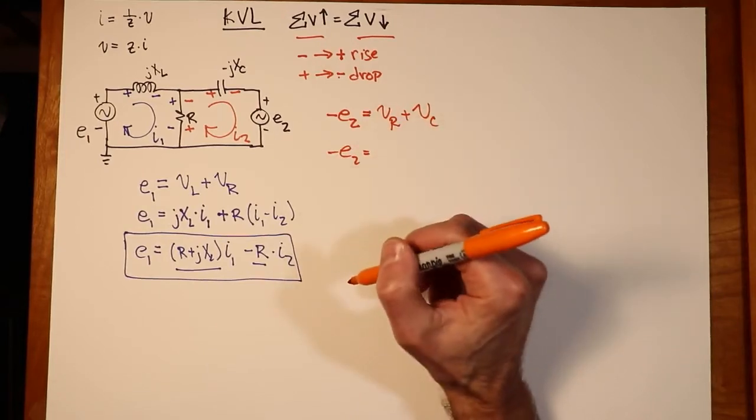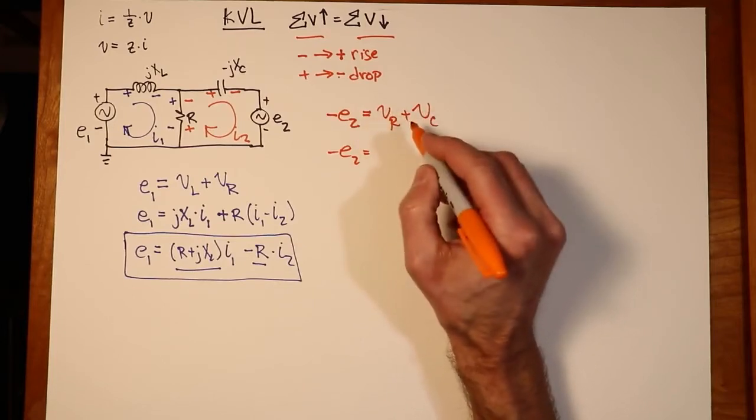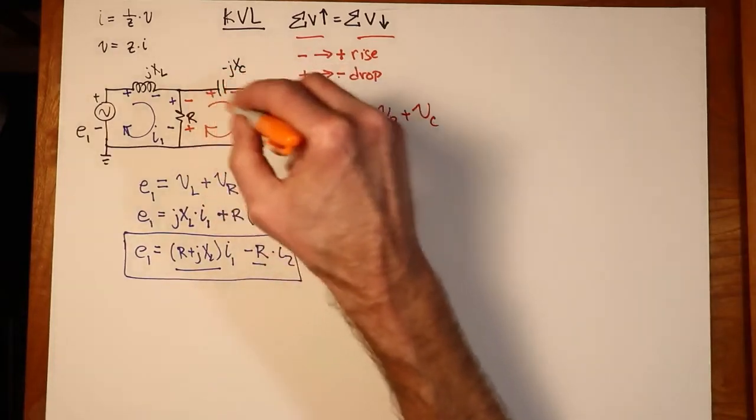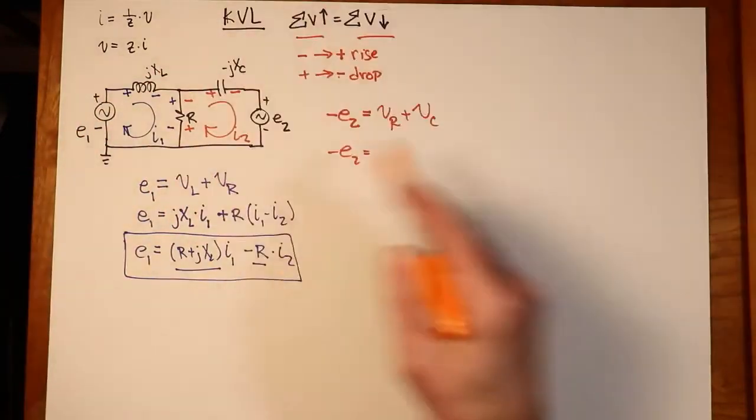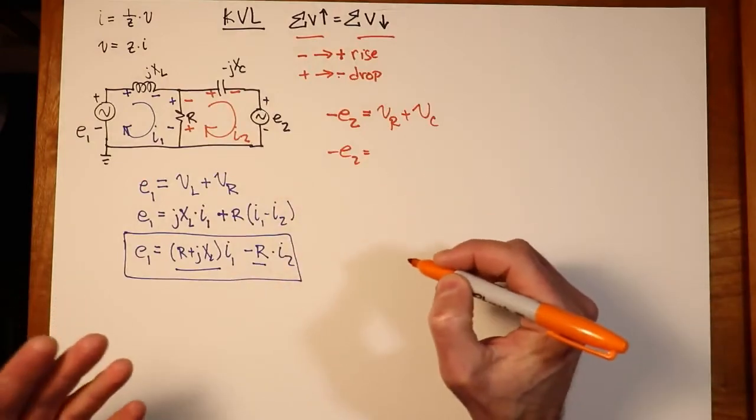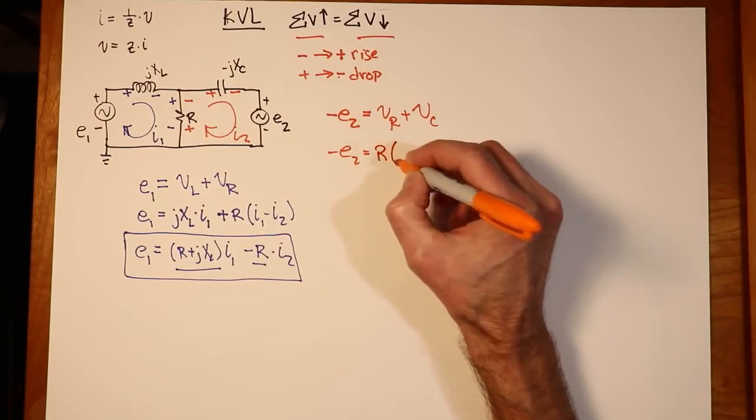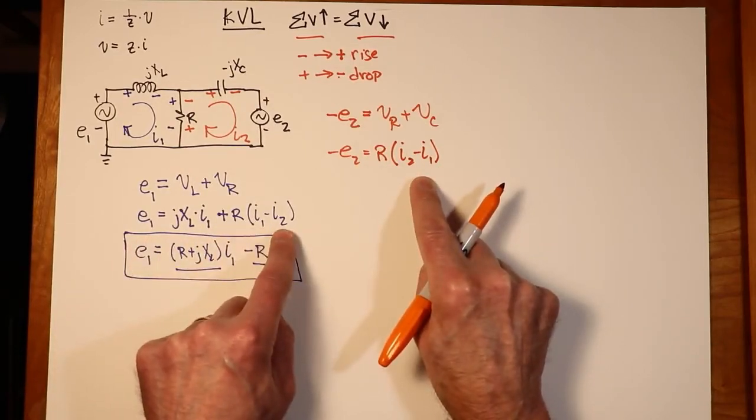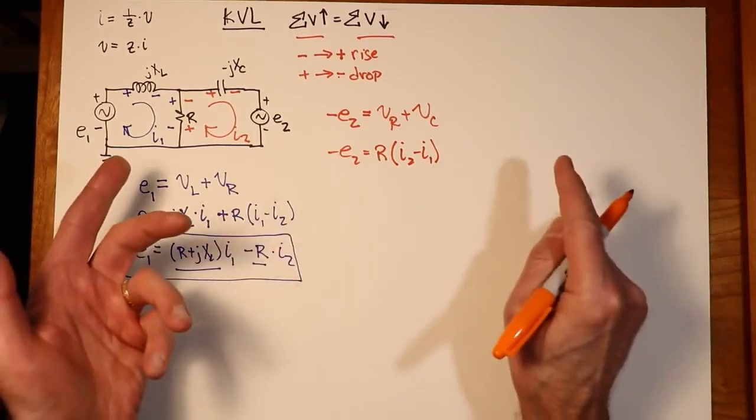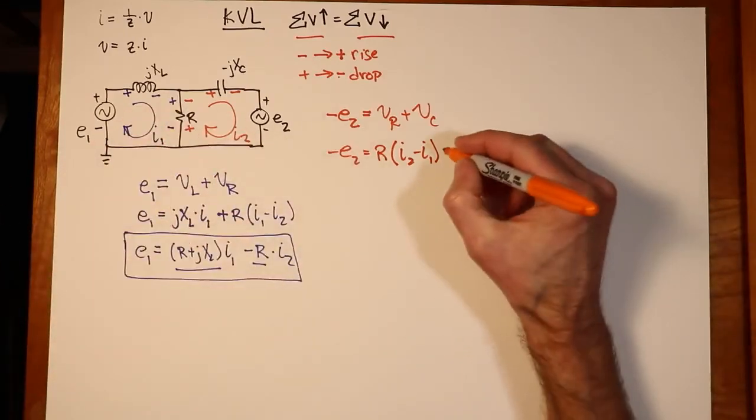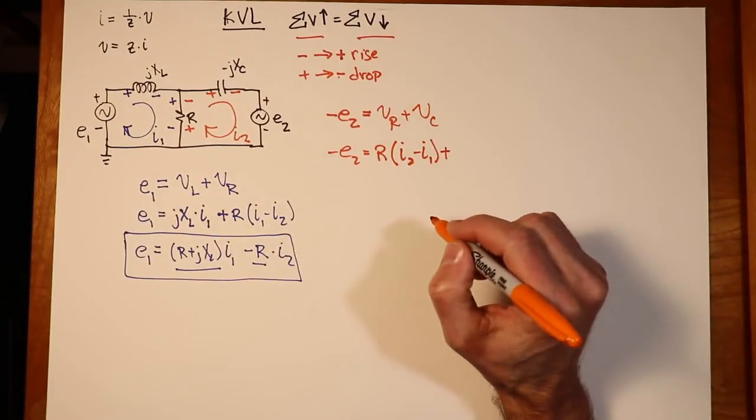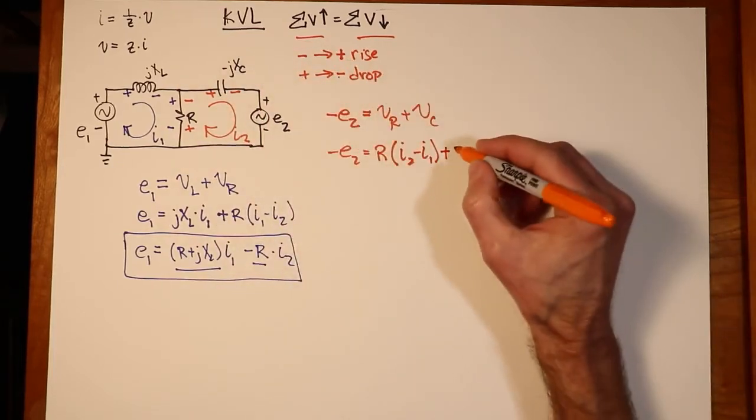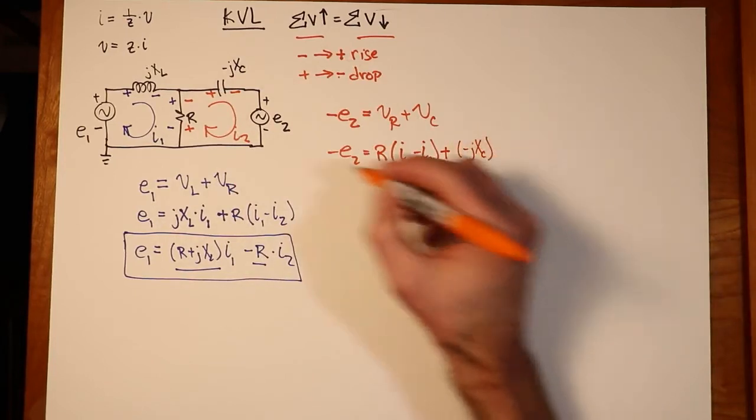Let's find the Ohm's law equivalents of these two things. The drop across the resistor, we're in the similar sort of situation we were last time. The drop across the resistor is two currents. But I'm in the I2 loop now. So I'm going to call this I2 minus I1. I1 is the fighting current. It's the opposing current. So the drop across that resistor is R times I2 minus I1. What's the drop across VC in terms of Ohm's law? That would be the current through it times minus JXC. The current through it is I2, so that's just a negative JXC times the I2.